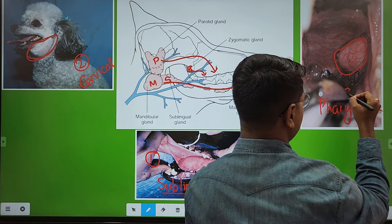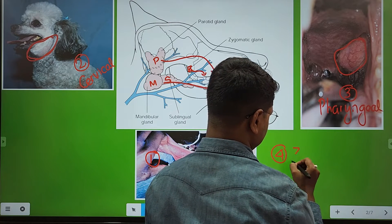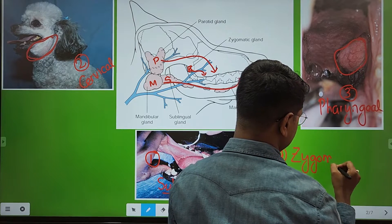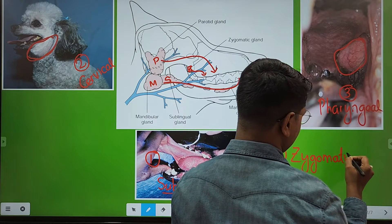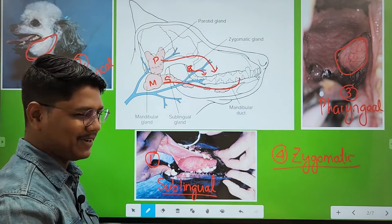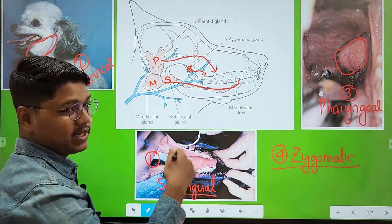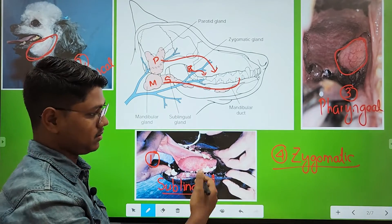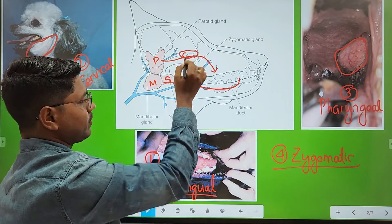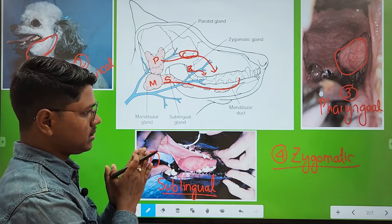The fourth type is zygomatic salivary mucocele — you will find this case very, very rare. If you find this case and have done this surgery, you will definitely win a gold medal at different conferences. The swelling of zygomatic salivary mucocele is found at the base of the eye, in that portion. So this is the basic concept behind the anatomy.